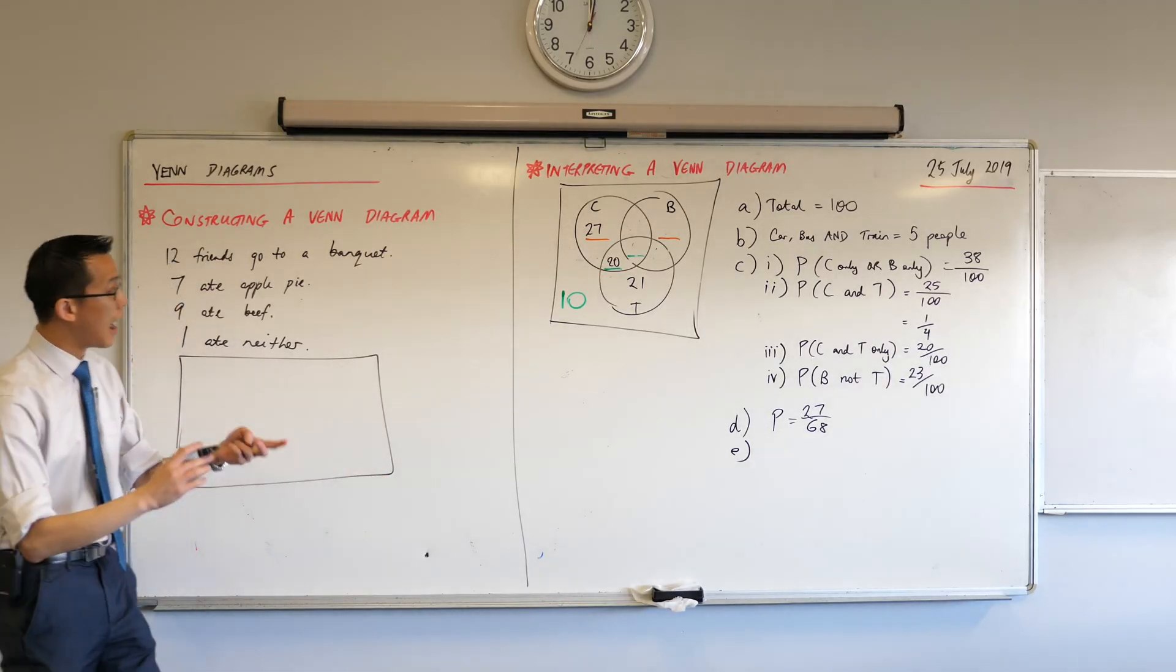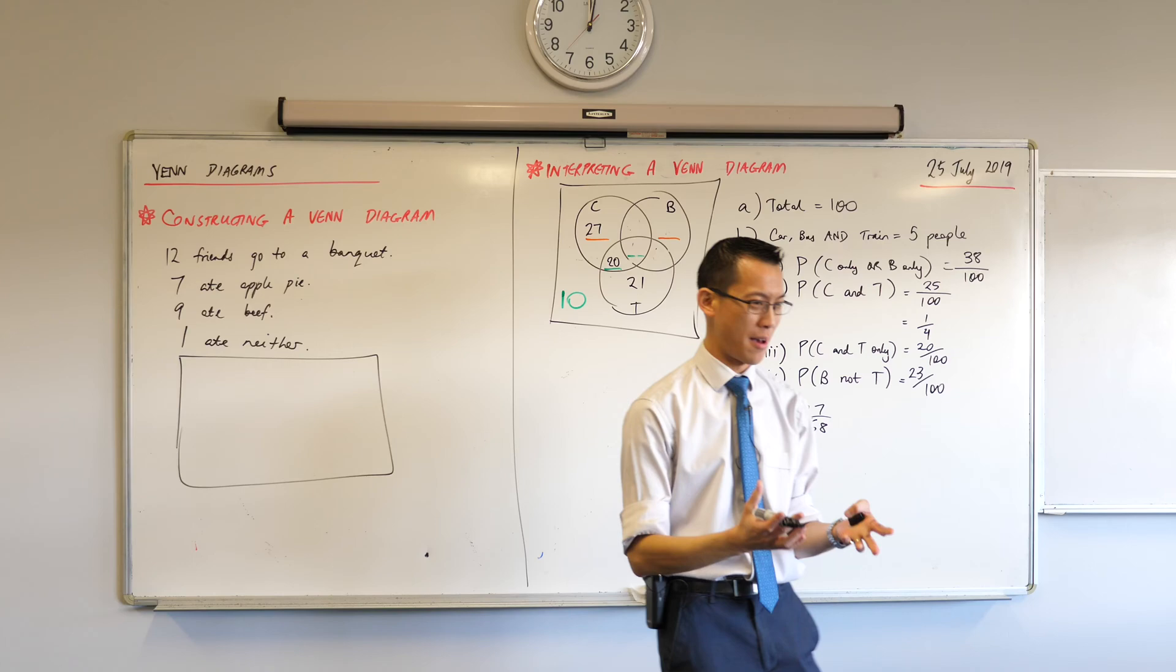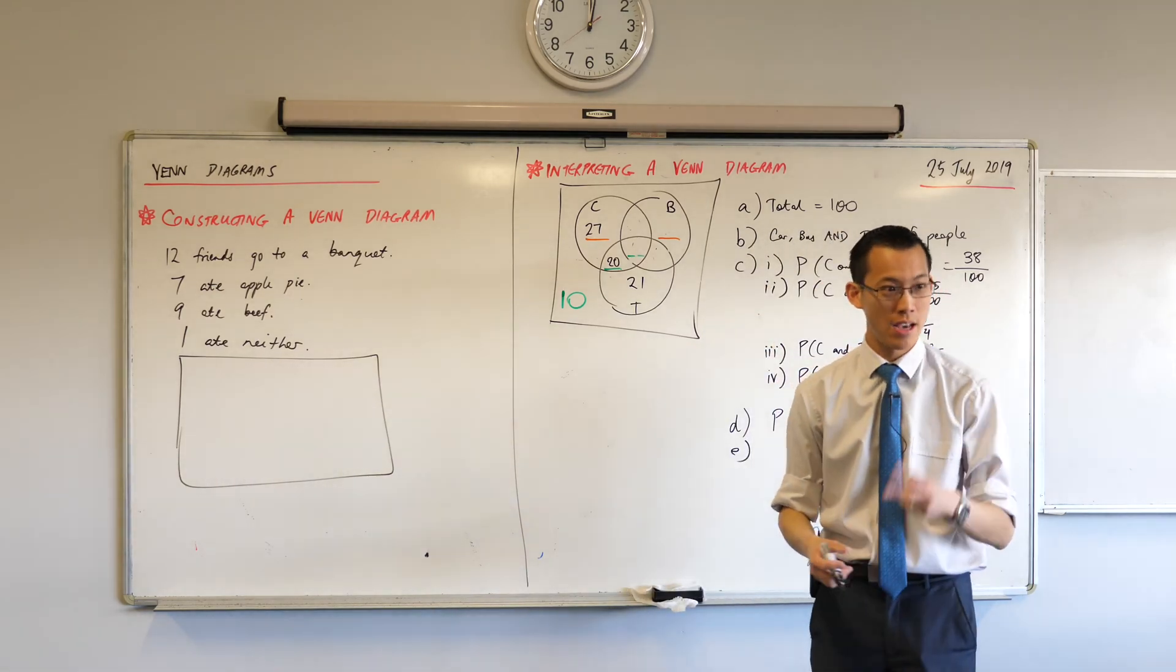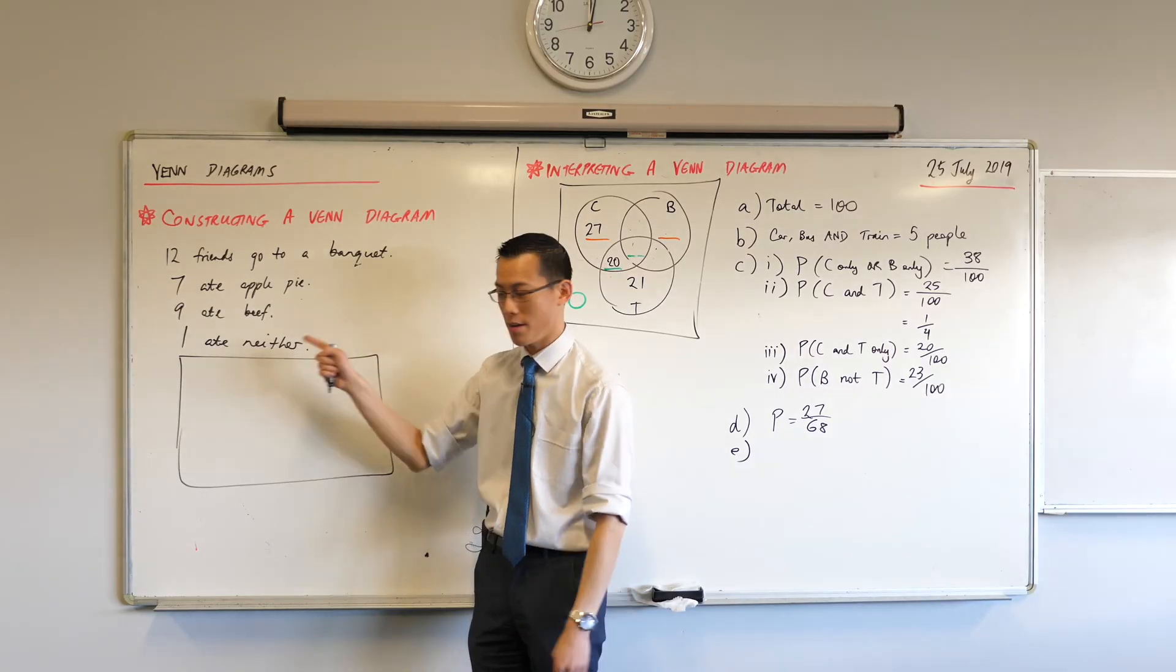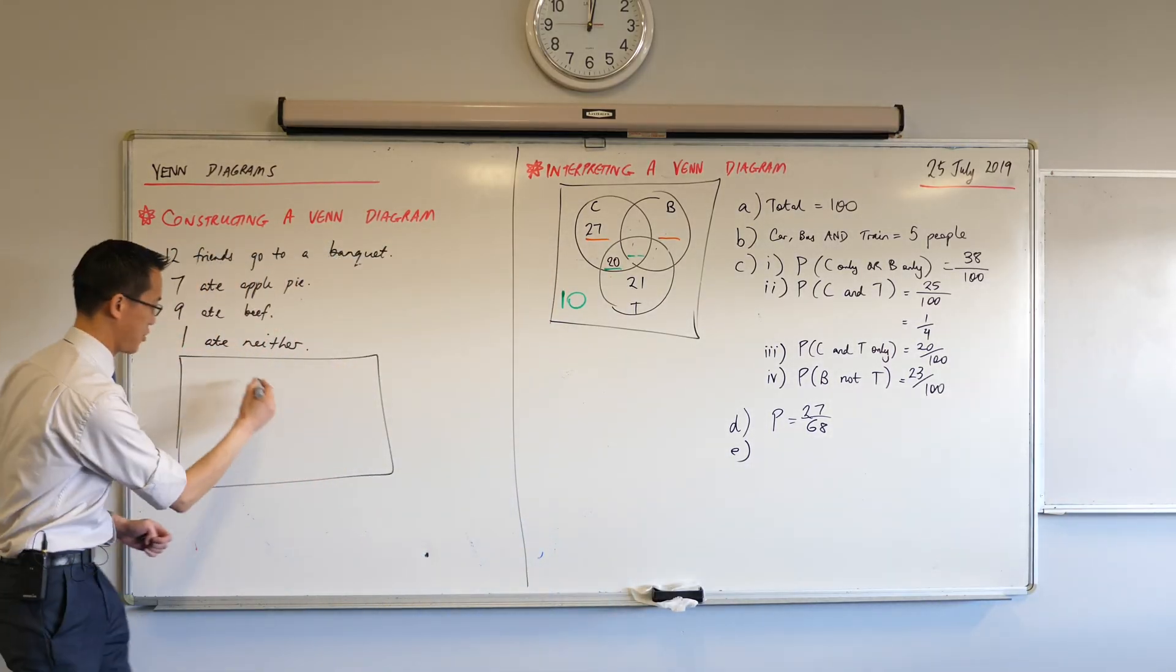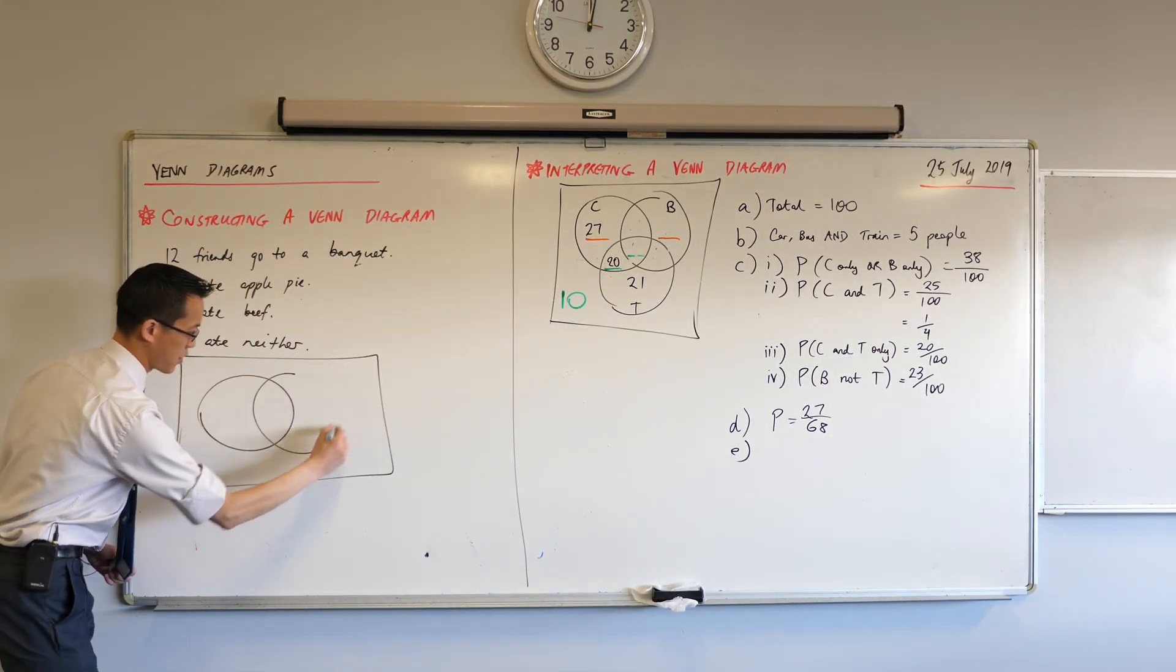We'll do a box. Mercifully, I'm not going to ask you to draw three circles. How many circles do we need for this situation? Just two. One of them is going to represent apple pie, one of them is going to represent beef. Can you tell I was hungry when I wrote down this question? Okay, so put your two circles down.